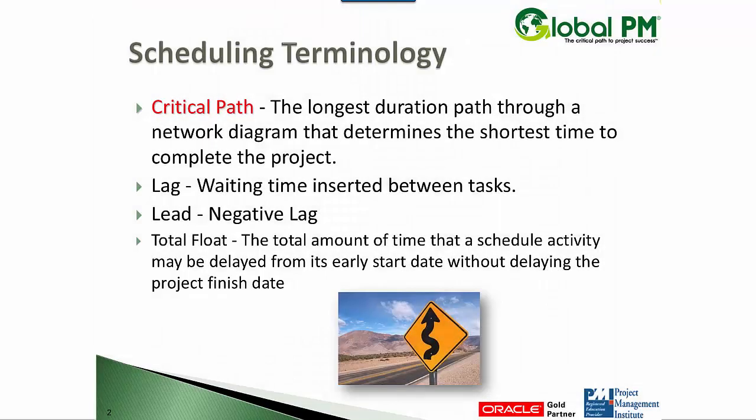Let's talk some terms. Some of the terms you've heard before in scheduling: critical path, lags, leads, total float, and free float. Let's start with critical path. What is it? It's the longest duration path through the schedule that determines the shortest time to complete the project. But what does that really mean? It's the longest path that tells you the shortest amount of time it will take to complete the project. You can finish no earlier than the end of the critical path.